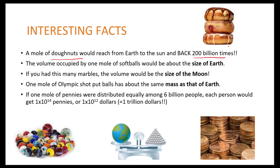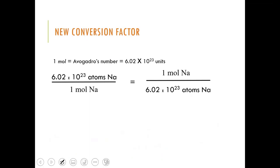One mole of Olympic shot put balls would have about the same mass as the Earth. And this is the best part to help you understand the enormity of it. If one mole of pennies were distributed equally among 6 billion people, each person would get 1 times 10 to the 14th pennies, or about $1 trillion.